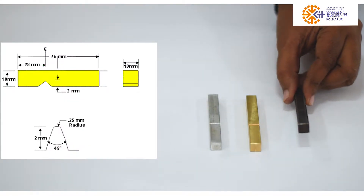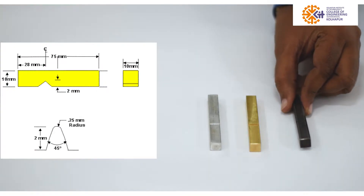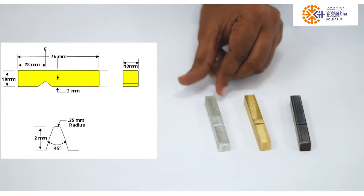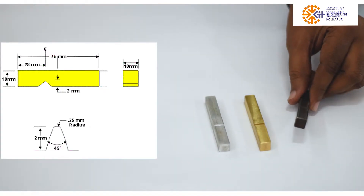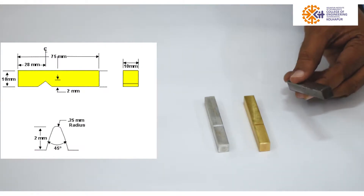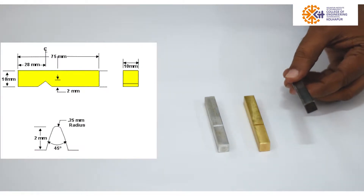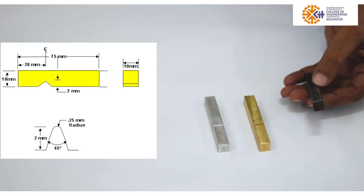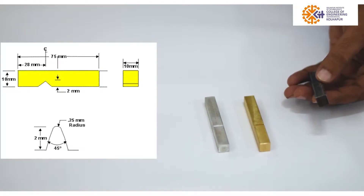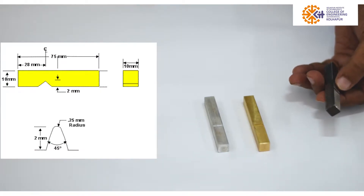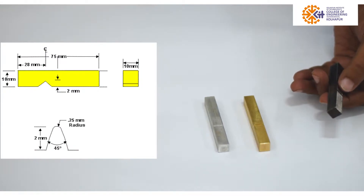Now we will discuss the Izod impact test. This is the mild steel specimen, this is the brass specimen, and the third one is the aluminium specimen. Generally the size of the specimen is 10 mm by 10 mm in cross-section, the length is 75 mm, and the groove is provided at a distance of 28 mm from any one edge.